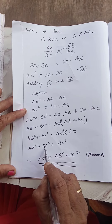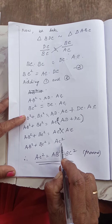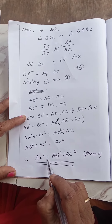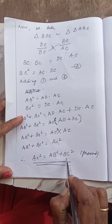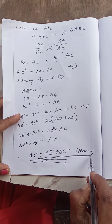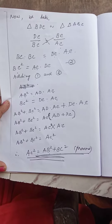Therefore, AB square plus BC square is equal to AC square. So AC square is equal to AB square plus BC square. This is now proved. Understood? Thank you.